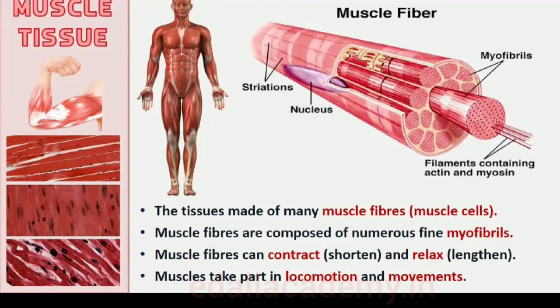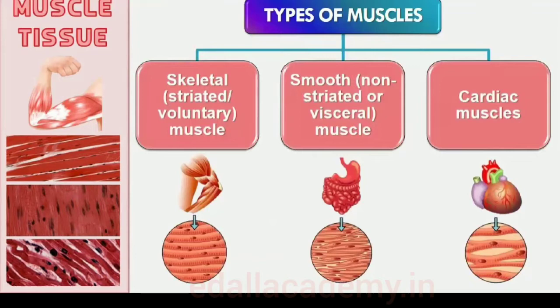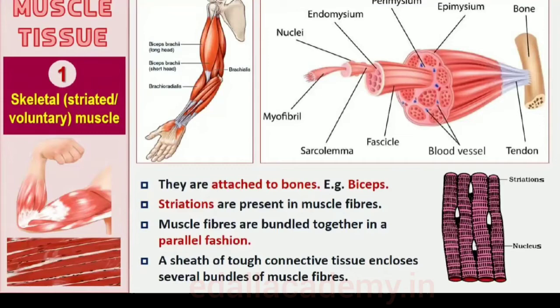Muscles are of three types: skeletal, smooth, and cardiac. Skeletal muscle tissue is closely attached to skeletal bones. In a typical muscle such as the biceps, striated or striped skeletal muscle fibers are bundled together in a parallel fashion. A sheath of tough connective tissue encloses several bundles of muscle fibers.